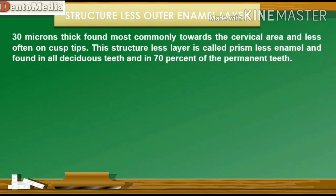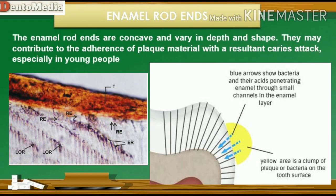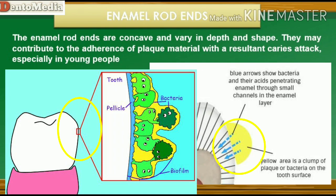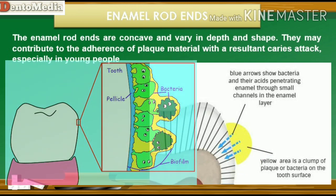There is a structureless outer layer of enamel about 30 microns thick, found most commonly towards the cervical area and less often on cusp tips. This structureless layer is called prismless enamel and is found in all deciduous teeth and in 70% of the permanent teeth. The enamel rod ends are concave and vary in depth and shape. They may contribute to the adherence of plaque material with a resultant caries attack, especially in young people.